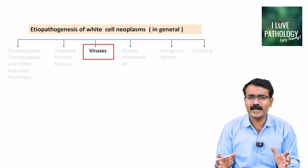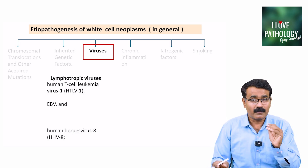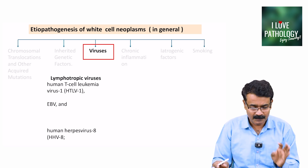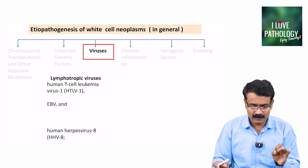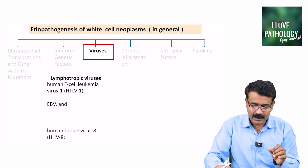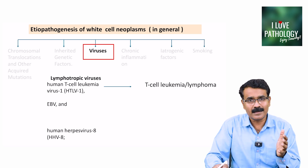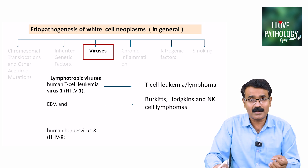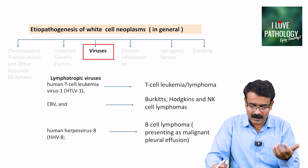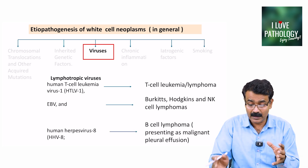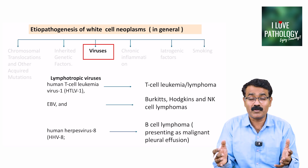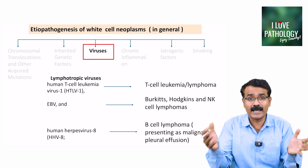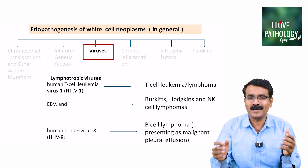Regarding viruses implicated in leukemia development: HTLV-1 (human T cell leukemia virus) can result in T cell leukemia or lymphoma. Epstein-Barr virus can result in Burkitt's lymphoma, Hodgkin's lymphoma, and NK cell lymphomas. Human herpes virus 8 (HHV-8) can result in B cell lymphomas and can also present as malignant pleural effusion.